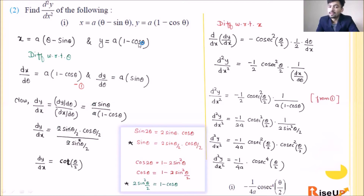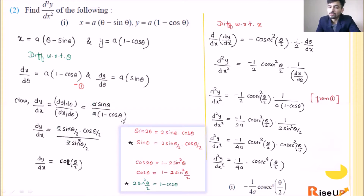So dy/dθ can be written as just sinθ. Now let us find dy/dx. dy/dx is (dy/dθ) upon (dx/dθ). Put the values: a·sinθ upon a(1 − cosθ). The a cancels.